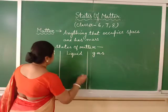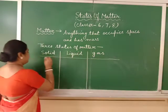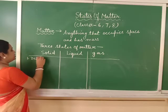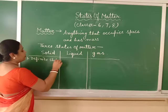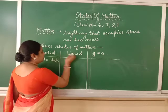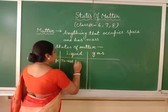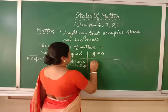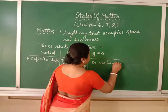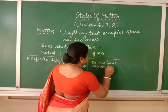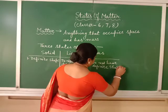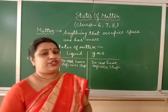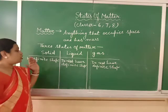The properties of these three states are completely different. In short, comparing solid, liquid, and gas: solids have definite shape. Liquids do not have definite shape, and gases also do not have definite shape. Liquids and gases take the shape of the container in which they are filled. If liquid is filled in a glass, it will take the shape of the glass. If you fill it in a bowl, it will take the shape of the bowl. Same is the case with gas. But solids have definite shape.